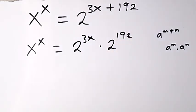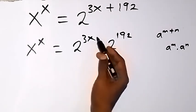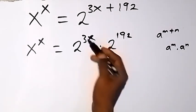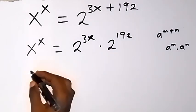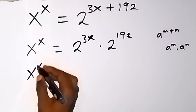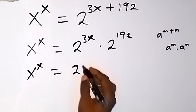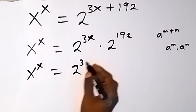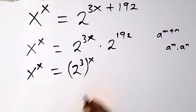And from there, this power can be separated as well. So we can bring 3 inside the bracket, and this will be x raised to power x equals to 2 raised to power 3, then raised to power x, also from the law of indices.